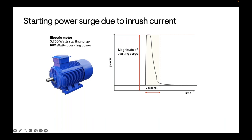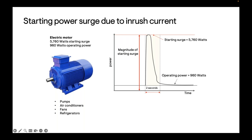A little more about power surge: this is primarily a concern with appliances that have a motor — air conditioners, refrigerators — which have a compressor motor inside. The most common types of motors have what's called inrush current for a couple of seconds when they first start up. In this example, the appliance demands about six times more power at startup than when running continuously — illustrated by a spike in power demand: about 6,000 watts for two seconds versus about 1,000 watts continuously. This is why it's very important to size the battery to handle the starting surge. Additional strategies like using soft starters can help.